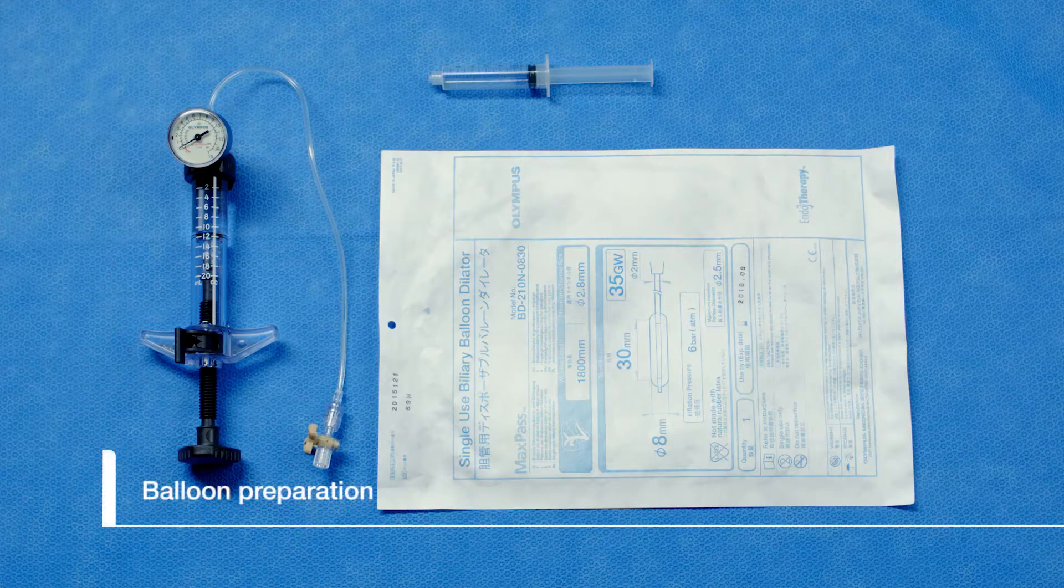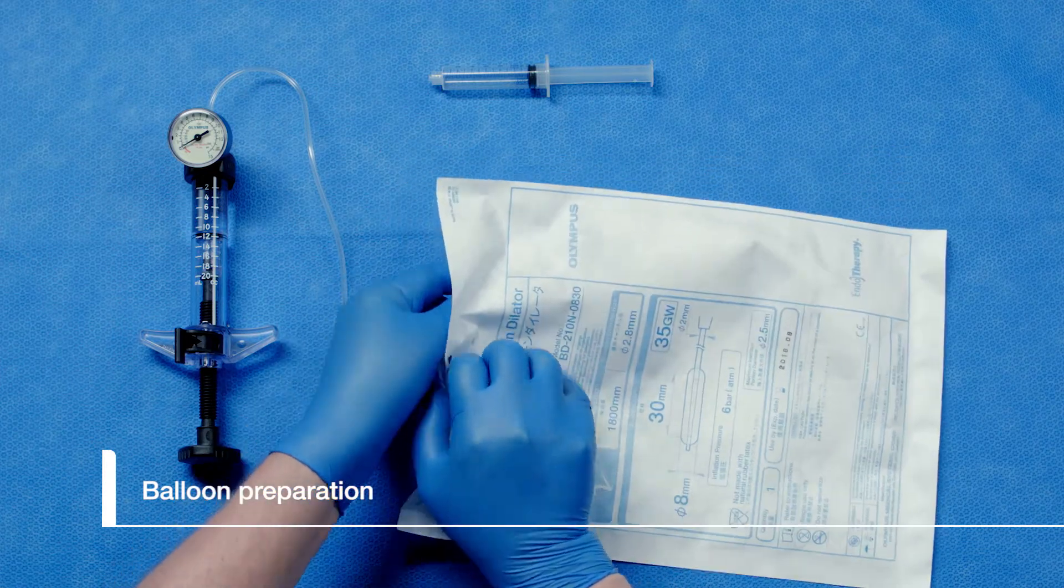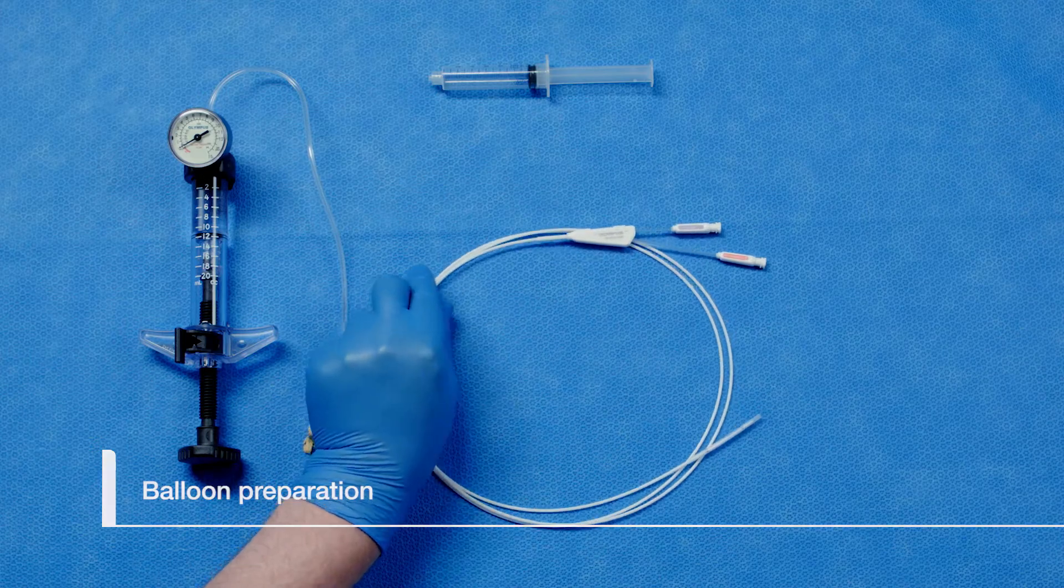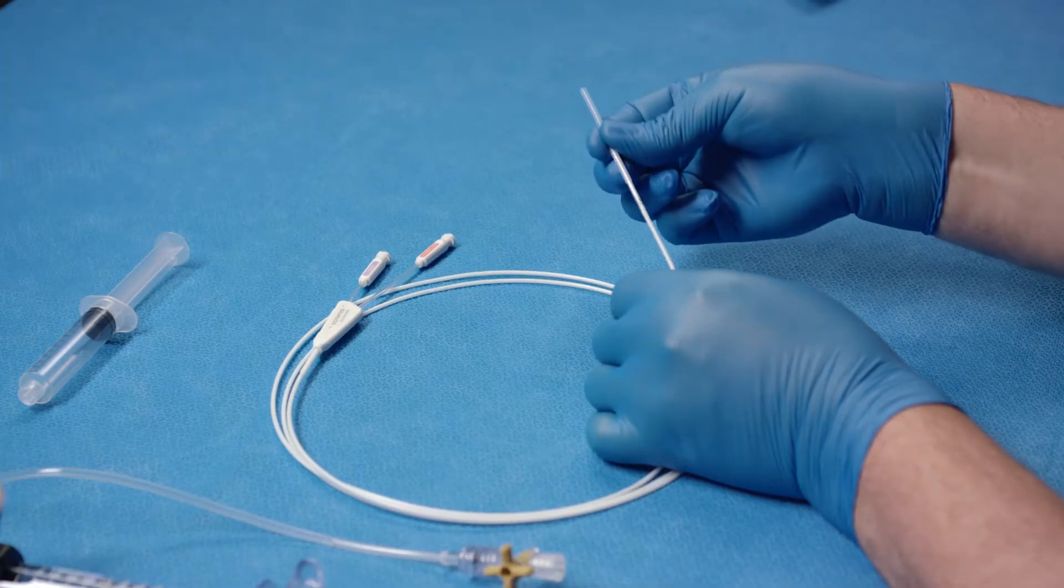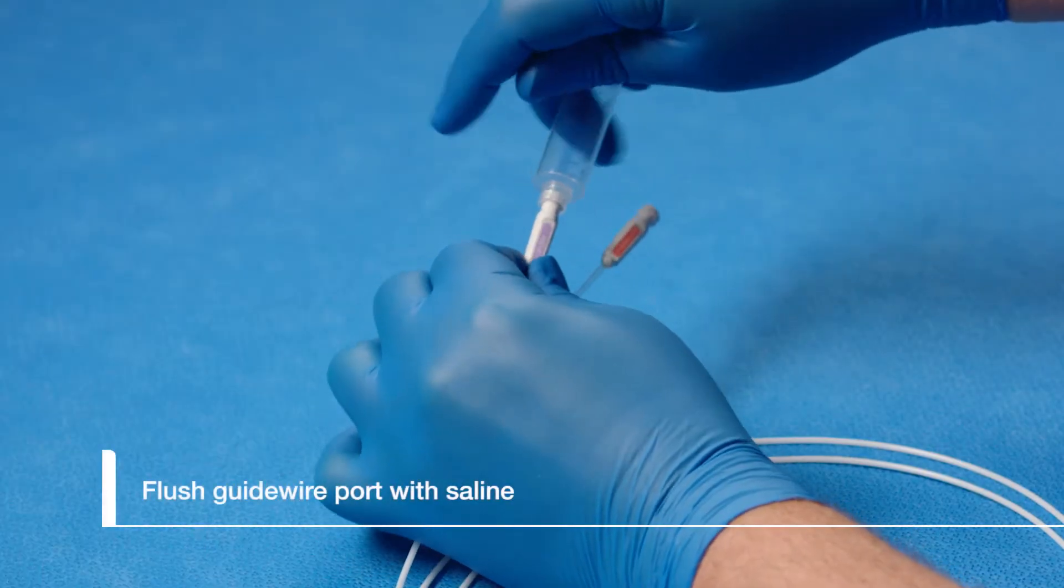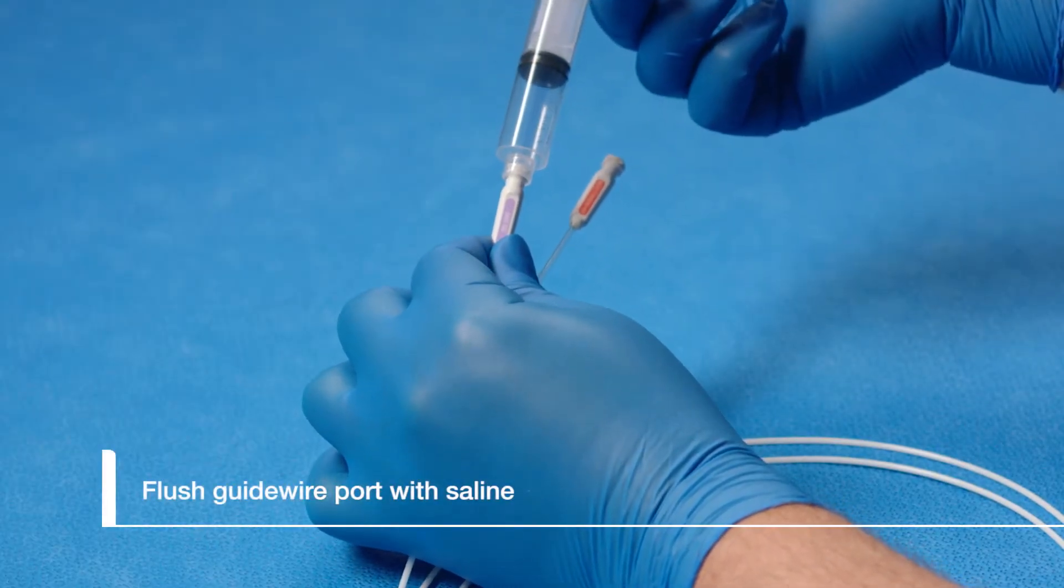Now we will prepare the MaxPass dilation balloon. First, remove the protective sleeve from the distal end of the balloon. We will need to flush the guide wire port on the balloon.